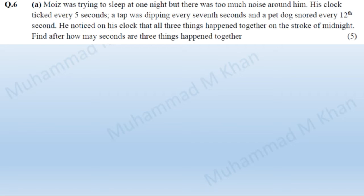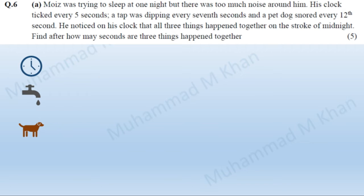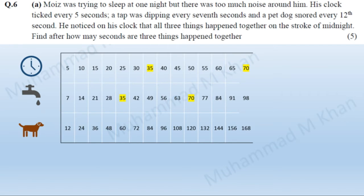A clock is ticking every 5 seconds, a tap was dripping every 7th second, and a pet dog snored every 12th second. We notice that all three things happen together on the stroke of midnight, and we have to find after how many seconds all three things happen together again.